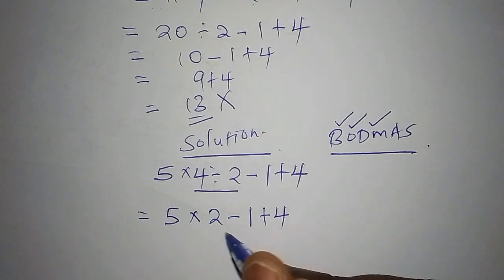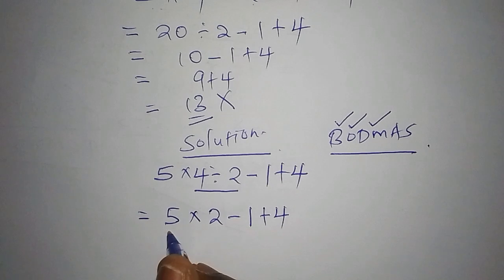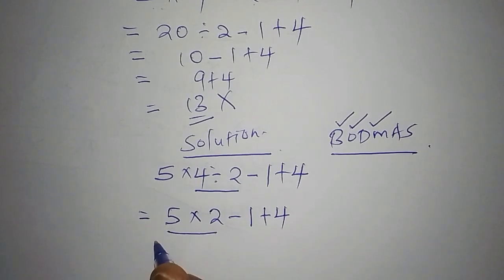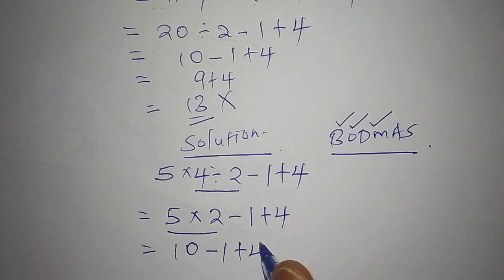Then the next step is the multiplication side. So we shall multiply these. We shall have 5 multiplied by 2 is 10. Then subtract from 1, add 2, add to 4.